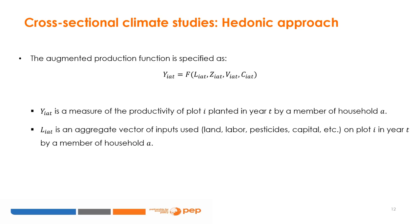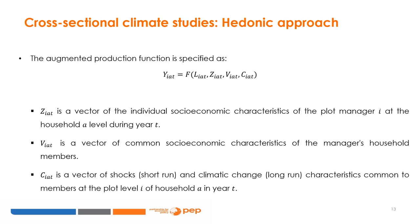In its standard form, the model can be specified by this equation, where YIAT is a measure of the productivity of plot I planted in year T by a member of household A. LIAT is an aggregate vector of inputs used — for example, land, labour, pesticides, capital, etc. — on plot I in year T by a member of household A. ZIAT is a vector of the individual's socioeconomic characteristics of the plot manager I at the household level A during year T. VIAT is a vector of common socioeconomic characteristics of the manager's household members. And CIAT is a vector of shocks, short-run characteristics and climatic change long-run characteristics common to members at the plot level I of household A in year T.